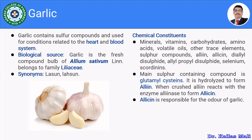The chemical constituents of garlic comprise mainly minerals, vitamins, carbohydrates, amino acids, sulphur compounds, allin, allicin, diallyl disulphide, allylpropyl disulphide, selenium, and other trace elements. These are the major chemical constituents present in garlic.